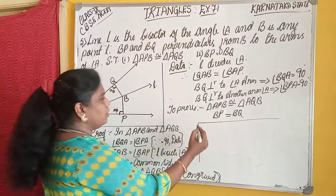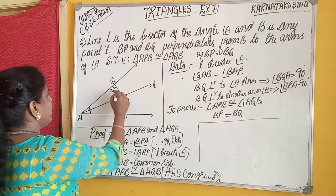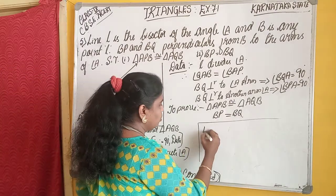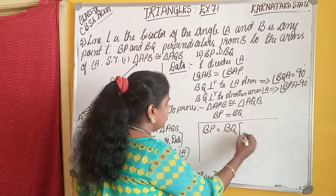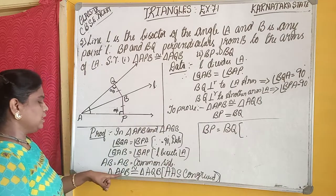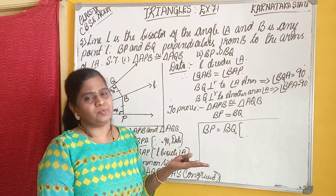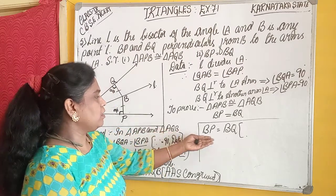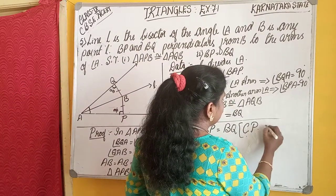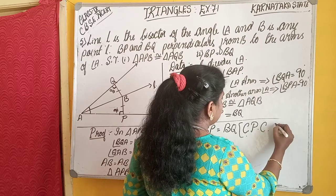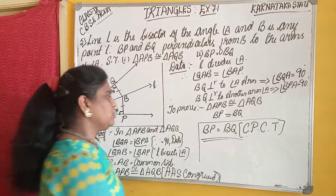And also, we proved BP equals BQ. Why are BP and BQ equal? Because triangle APB is congruent to triangle AQB. That means the corresponding parts of the congruent triangles — BP and BQ are corresponding parts. Therefore, according to CPCT, BP equals BQ.